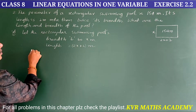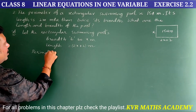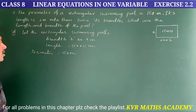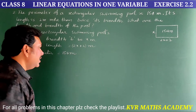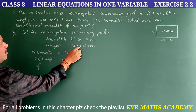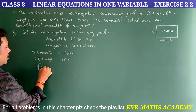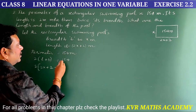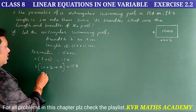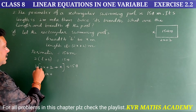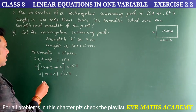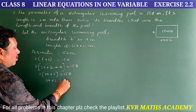The perimeter formula for a rectangle is 2(L + B) = 154. Substituting L = 2x + 2 and B = x: 2(2x + 2 + x) = 154, which simplifies to 2(3x + 2) = 154. So 3x + 2 is equal to 77.